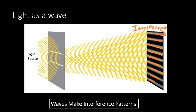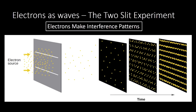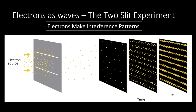We know that we have a wave whenever we see interference patterns. We can understand that light is a wave and that water is a wave. What gets really trippy is that it turns out electrons also make these interference patterns. Electrons we all think of as particles, but if we send them through two slits and accumulate the results over time, we see on the screen this same interference pattern. The details are complicated — you could study this for a whole semester in college — but just understand that electrons make interference patterns, and so we think about them as waves sometimes.